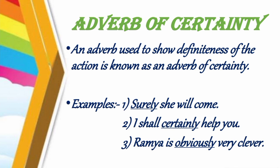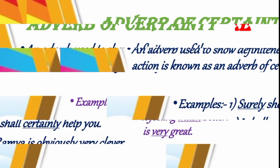Then we have adverb of certainty. An adverb used to show the definiteness of the action is known as an adverb of certainty. Examples: 'Surely she will come'; 'I shall certainly help you'; 'Ramya is obviously very clever'. The words surely, certainly, and obviously are examples of adverb of certainty, showing the definiteness of the action being done.